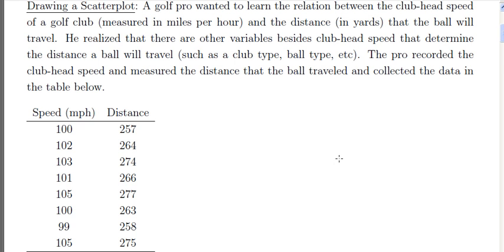We have two variables: speed of the golf club and distance the ball travels. We have a total of eight observations. Each observation, the speed of the golf head was recorded and the distance that the golf ball went, I believe in yards, was also recorded. We expect there to be some association or relationship between speed and distance. We would expect that as speed increases, so would the distance, so that would be a positive association.